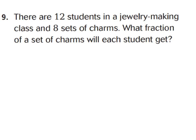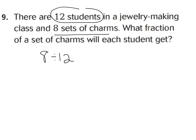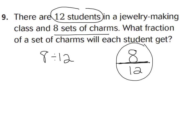Let's look at our problem solving at the bottom of the page. Number nine says there are twelve students in a jewelry-making class and there are eight sets of charms. What fraction of a set of charms will each student get? We're dividing the eight sets of charms among twelve students, so our equation is eight divided by twelve. Written as a fraction, that's eight-twelfths. We can simplify by dividing numerator and denominator by the greatest common factor, which is four, giving each student two-thirds of the charms.